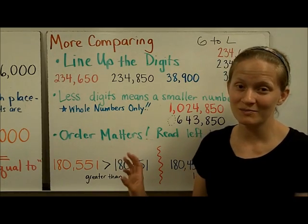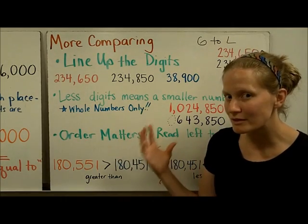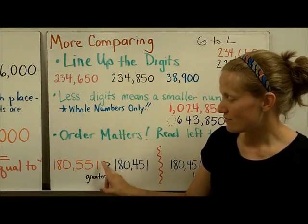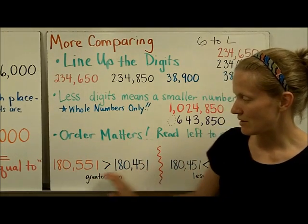But now in fourth grade, you must be able to not just point it in the right direction, but know that this reads as greater than. So if we're going to read this whole statement, it would be 180,551 is greater than 180,451.